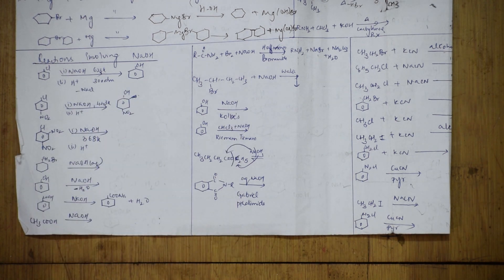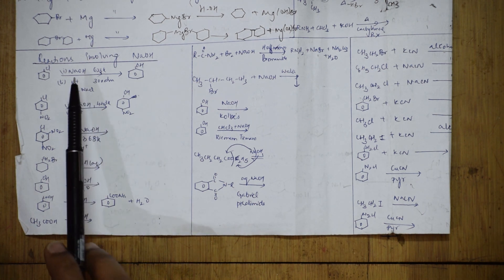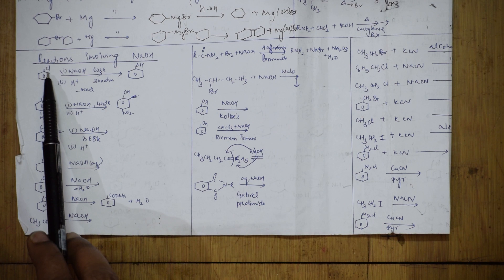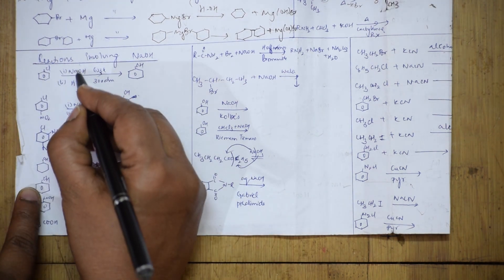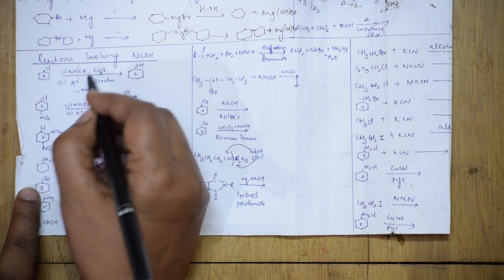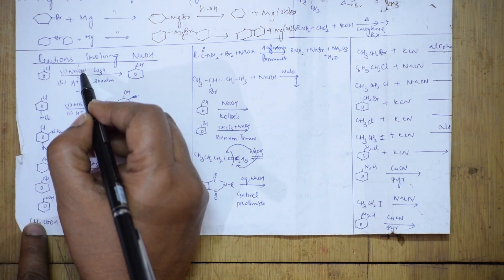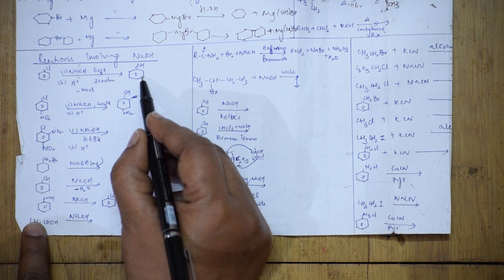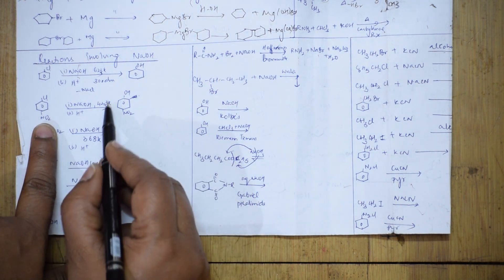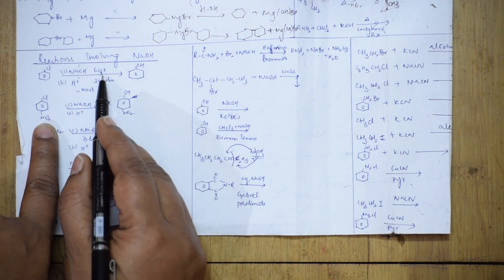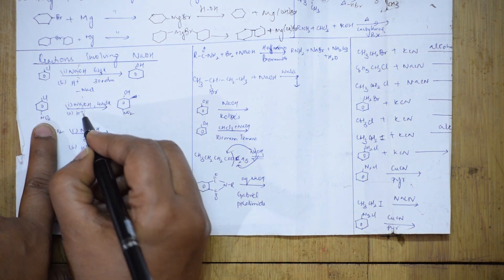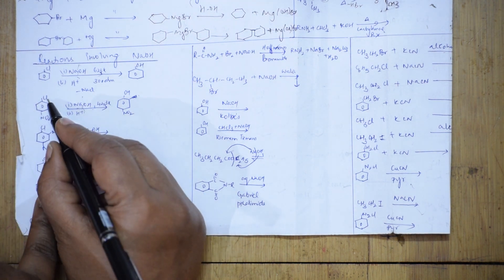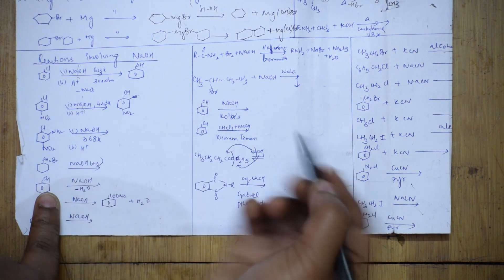Whenever you have NaOH with an alkyl aryl halide, NaOH is the nucleophile. Sodium hydroxide supplies OH⁻, which replaces the Cl to give an alcohol. At 623 K and 443 K, NaOH is present and this nucleophile replaces the Cl with OH.